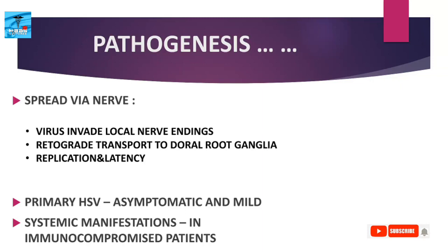The virus is transported by retrograde axonal flow to the dorsal root ganglia, where it replicates further and then undergoes latency. Primary HSV infections are usually asymptomatic and mild. Systemic manifestations occur in immunocompromised patients.